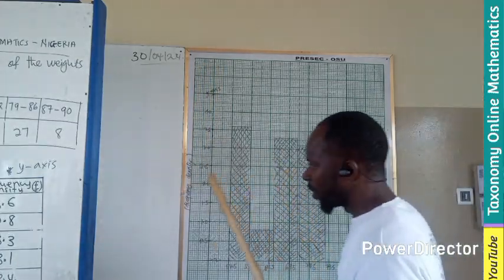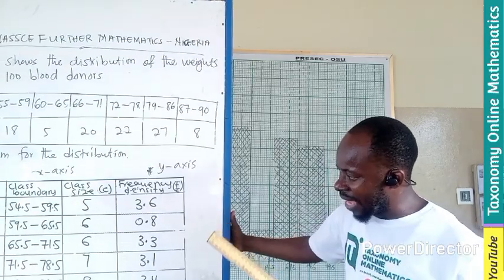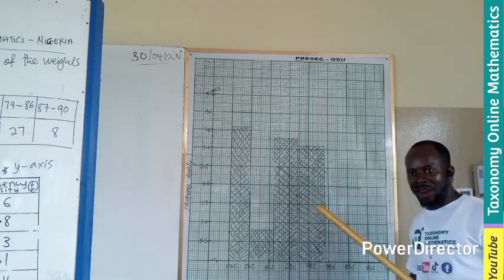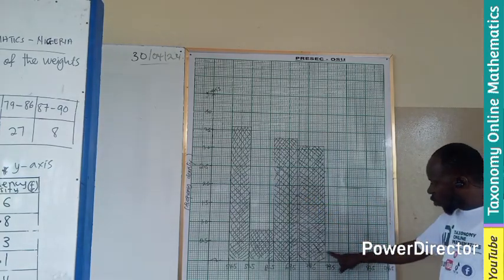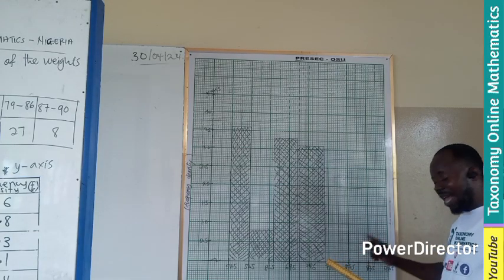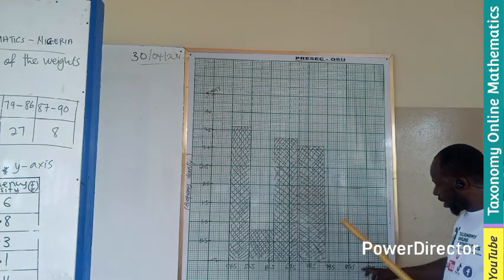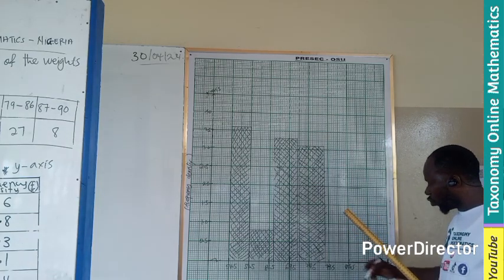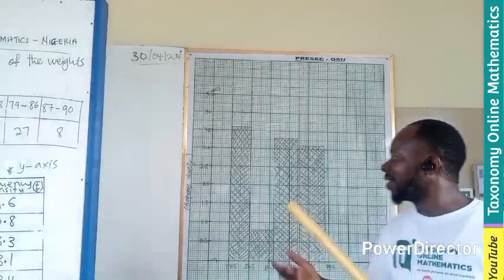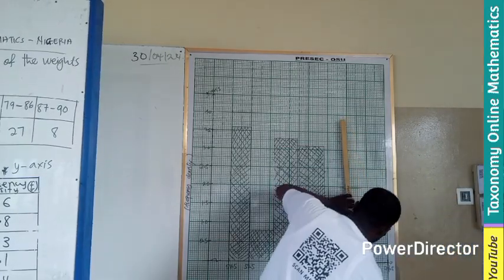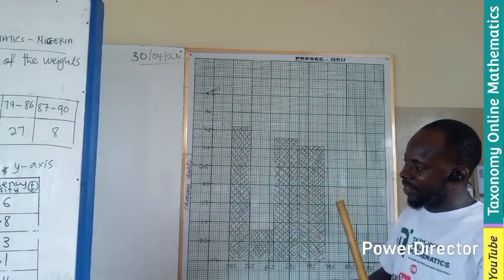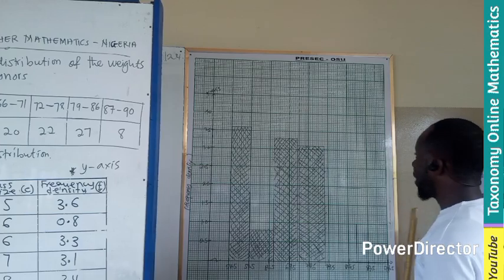So the next one is going from 78.5 to 86.5 with an interval of 8. So 7, 8. Remember, every two lines, you did one unit. So if that is 8, we are adding 2 to 84. That will make it 86. So we are adding the point here. Let's check the frequency density, which will be 3.4. The highest so far.